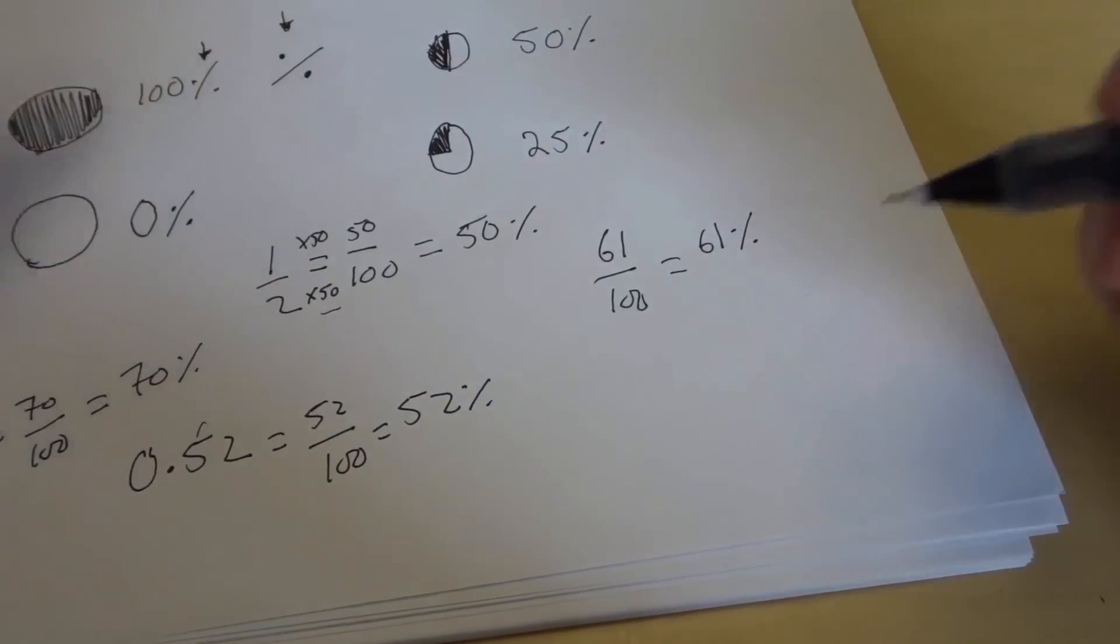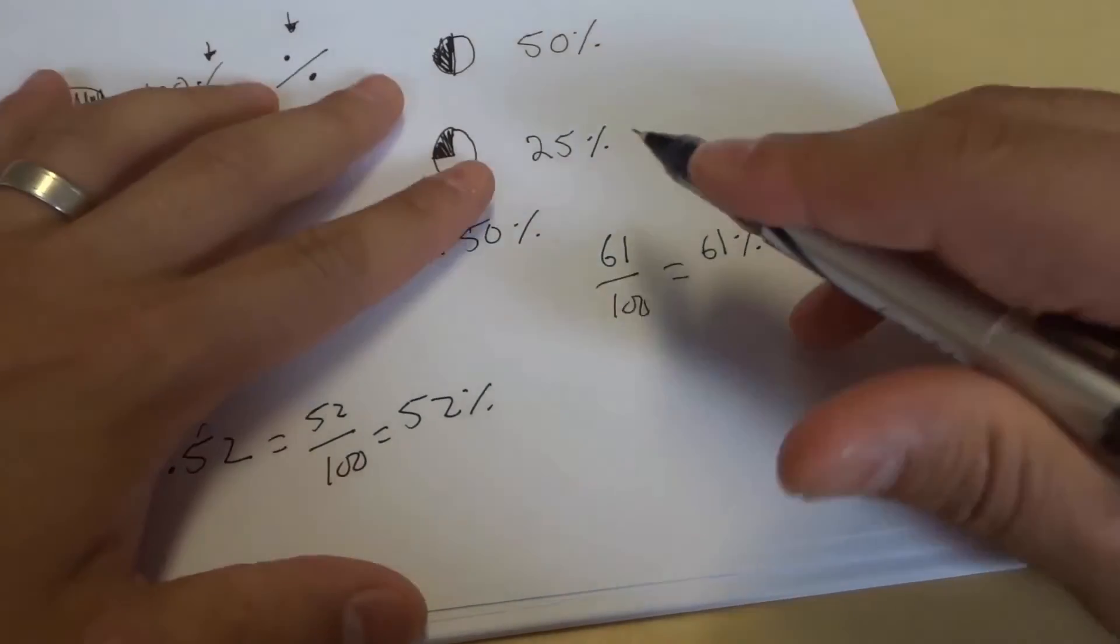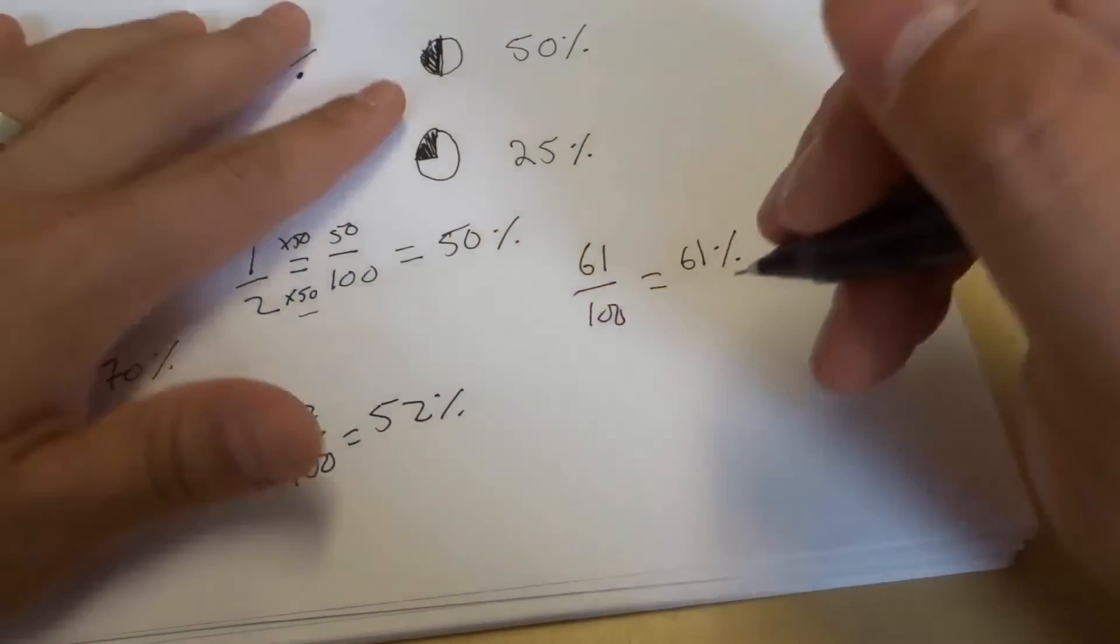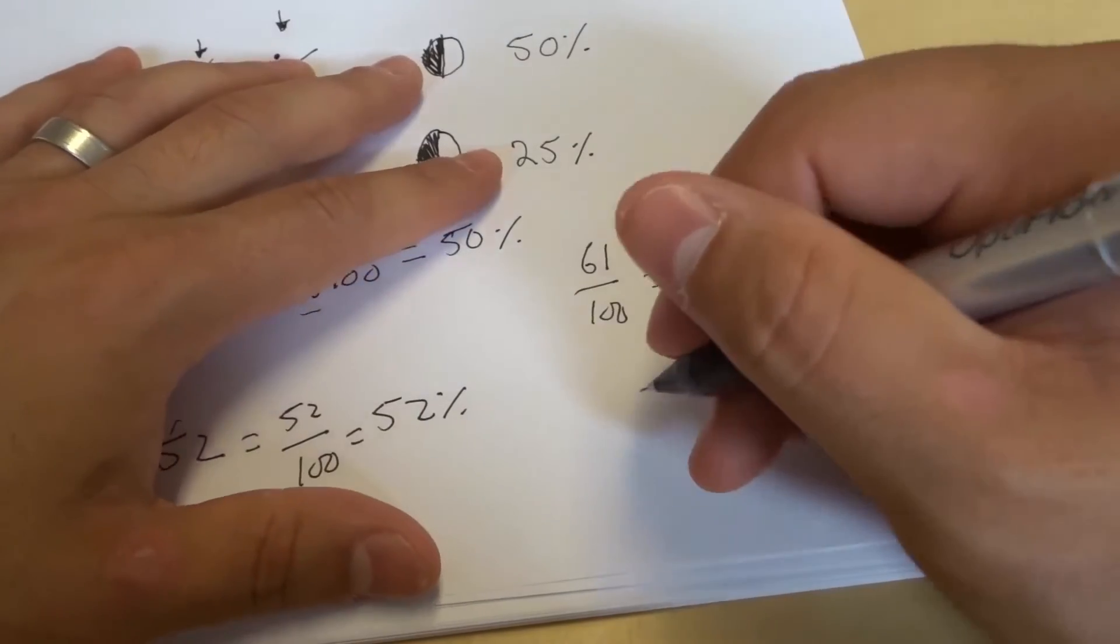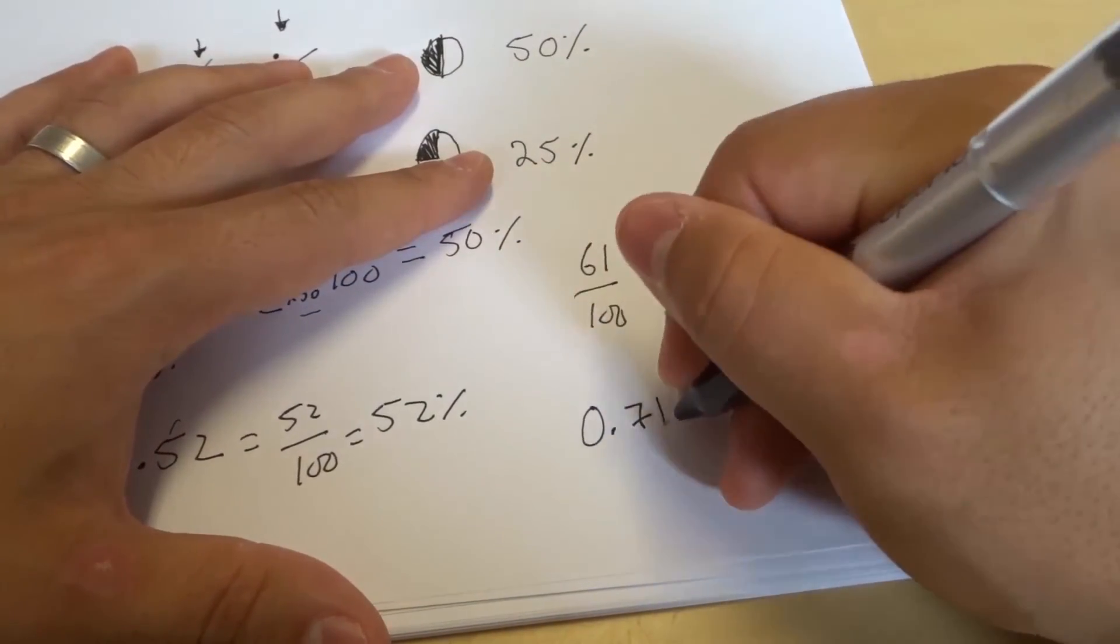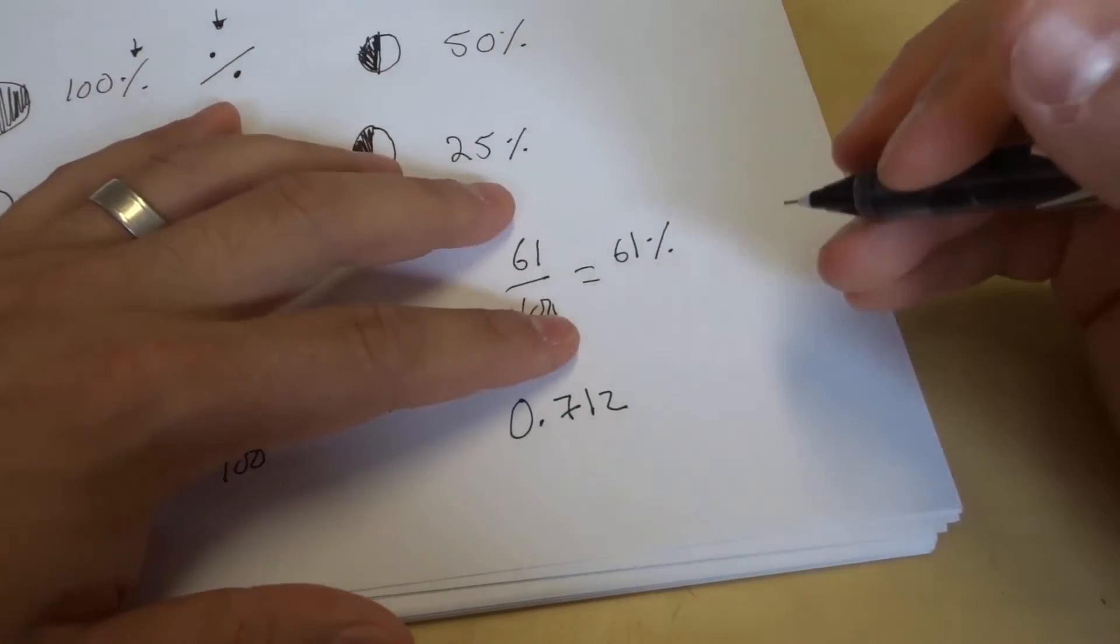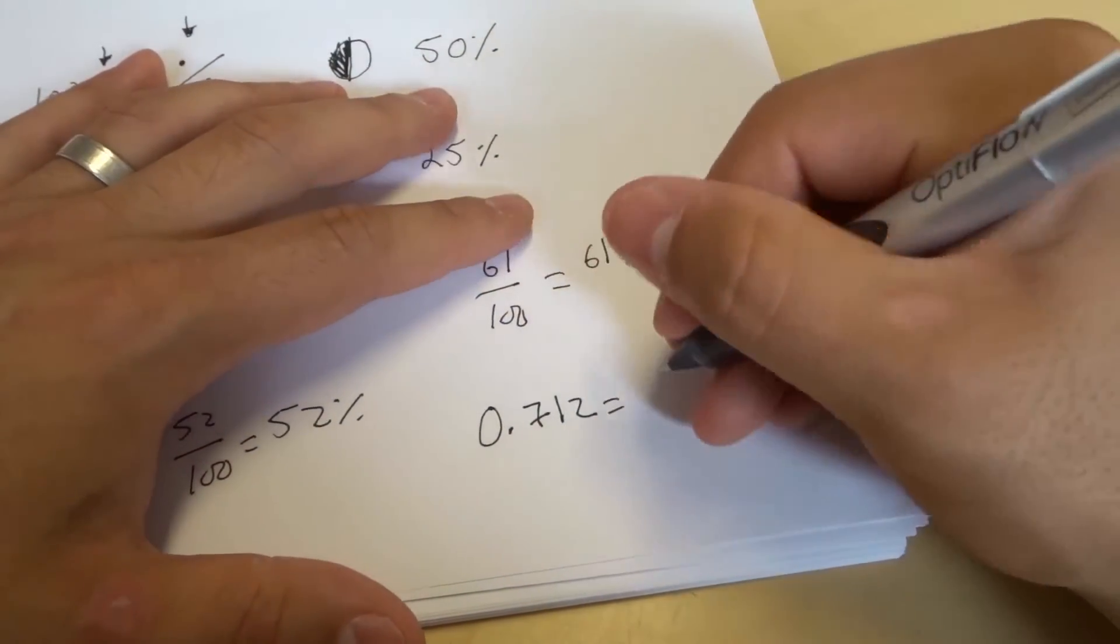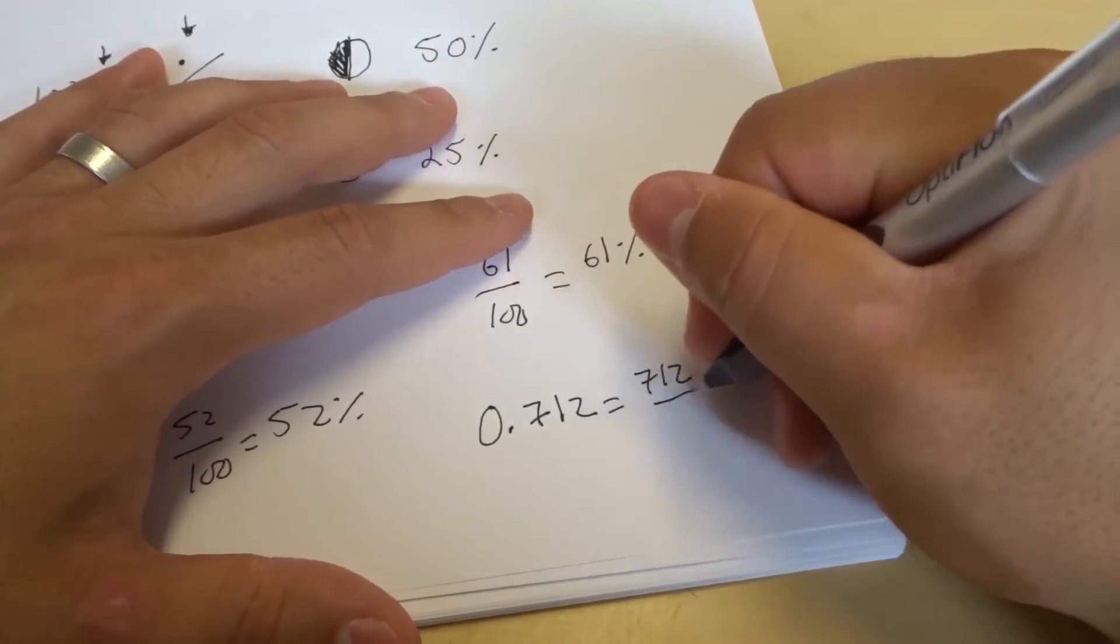And there's one final thing, and this is probably the most complicated part, but if you understand it, you're good to go with percentages. If you have a number that has three digits after the decimal, so let's say you have 0.712, 0.712 is equivalent to 712 out of 1000.